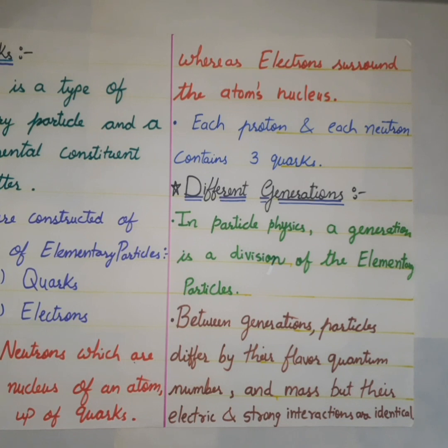Now let's discuss the different generations of particles. In particle physics, a generation is a division of the elementary particles. Between generations, particles differ by the flavor quantum number and mass, but the electric and strong interactions are identical.